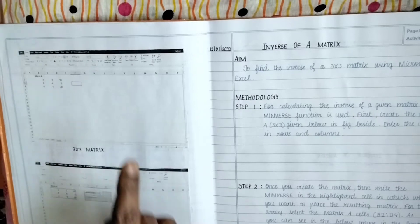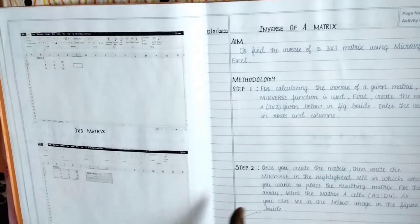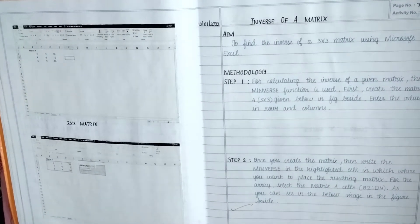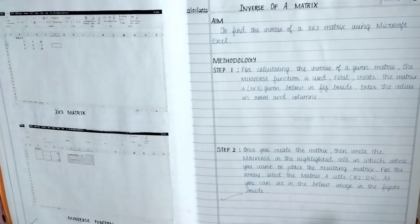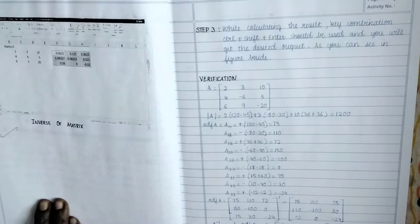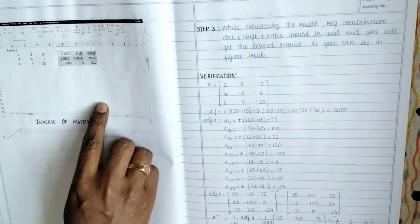Then what is the inverse operation command, MINVERSE function. So that is being entered, relevant step one and step two, parallelly on the right-hand side is being explained. Then third one, how do you find, after when you enter that MINVERSE function.